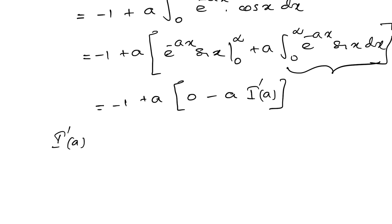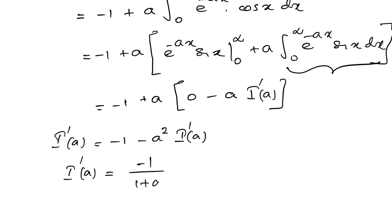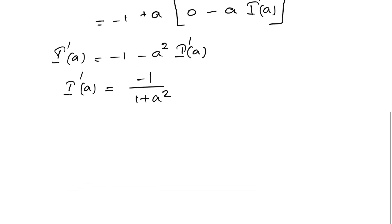Simplifying, we have I'(a) = −1 − a² times I'(a). Isolating I'(a), we get I'(a) = −1 over (1 + a²).